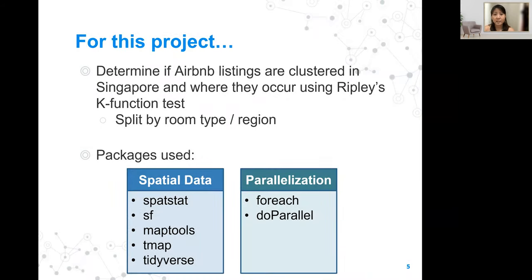For this project, we're trying to determine if Airbnb listings are clustered in Singapore and where they occur using the K function tests. We use it split by room type and region type.